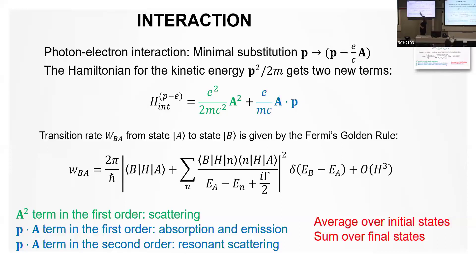At second order, the p·A term causes resonance scattering. It involves reaching virtual intermediate states — the photon is absorbed, creates an intermediate state that decays into some other state closer to the ground state or a lower energy state. There's a resonance term that can become very small when the incident photon energy is close to the intermediate state energy, which can enhance the resonance spectrum greatly and give more information than the first-order term.